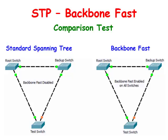We see that the access layer switch is blocking the interface to the backup switch to prevent switching loops from forming. The idea behind Backbone Fast is that if the access layer switch can confirm it still has a connection to the root switch, then it can ignore the max age timer and immediately start the listening and learning process on any interface that it receives inferior BPDUs.